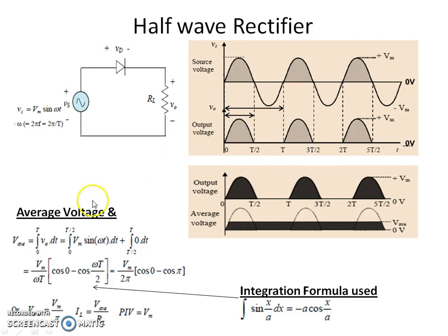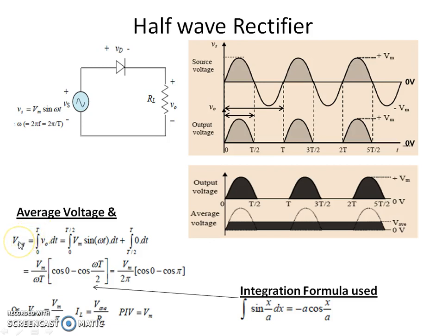The average voltage is calculated by integrating the output voltage from 0 to T and dividing by T. The result is that the average voltage for a half-wave rectifier is Vm divided by π.